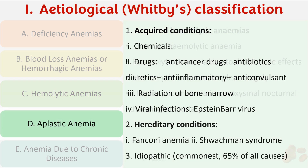Aplastic anemia also has hereditary and acquired conditions. Acquired conditions can be due to chemicals, drugs, radiation of bone marrow, and viral infection. In all these conditions the bone marrow is depressed so that production of RBCs does not take place. All three cell lines — WBCs, RBCs, and platelets — are affected. Hereditary conditions include Fanconi's anemia and Shwachman's syndrome, while idiopathic is the most common cause.